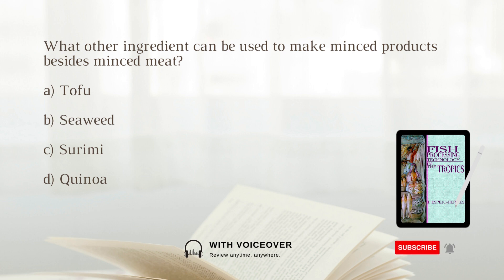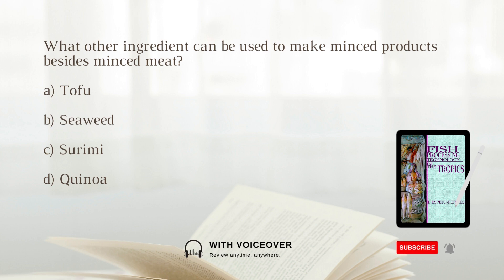What other ingredient can be used to make minced products besides minced meat? A. Tofu. B. Seaweed. C. Surimi. D. Quinoa. Answer: C. Surimi.